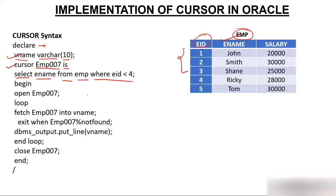So you are looking for these three rows and in those rows you are looking only for ename. Then we have the begin section — in begin we are opening the cursor imp007 which we have created. After that we take a loop, because there could be more than one row. The cursor fetches one row at a time, so if there are three rows satisfying the condition, it will execute row by row, and for that we need a loop.